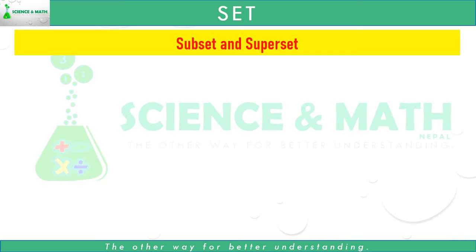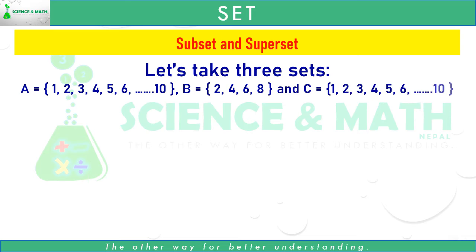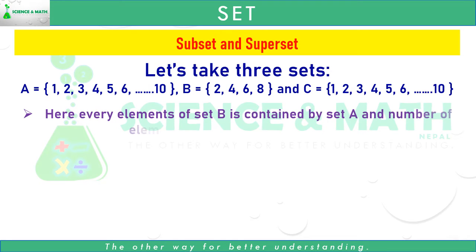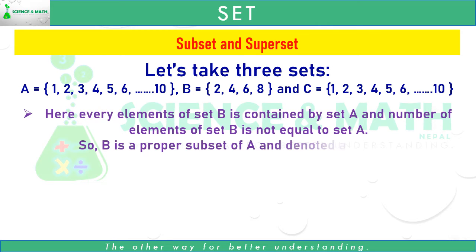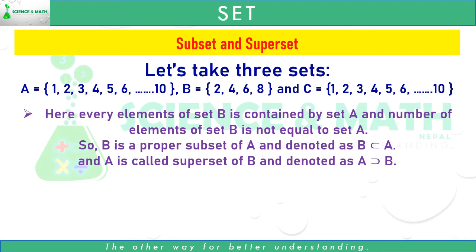Now let's learn about subset and superset. Let's take three sets A, B and C. A equals the set of 1, 2, 3, 4, 5, 6, 7, 8, 9, 10; B equals the set of 2, 4, 6, 8; and C equals the set of 1, 2, 3, 4, 5, 6, 7, 8, 9, 10. Here, every element of set B is contained by set A and the number of elements of set B is not equal to set A. So B is a proper subset of A, denoted as B ⊂ A, and A is called the superset of B, denoted as A ⊃ B.